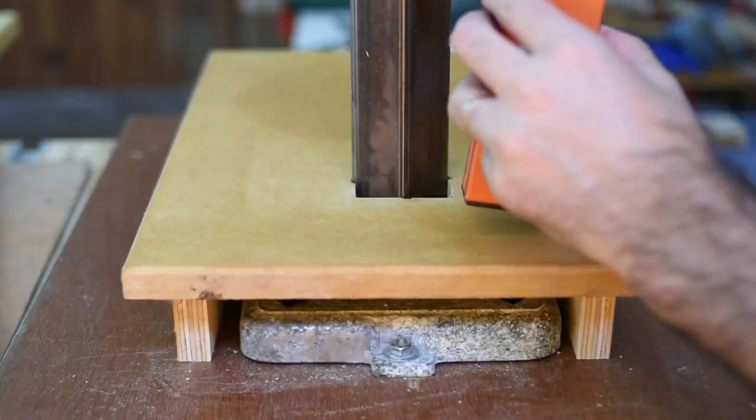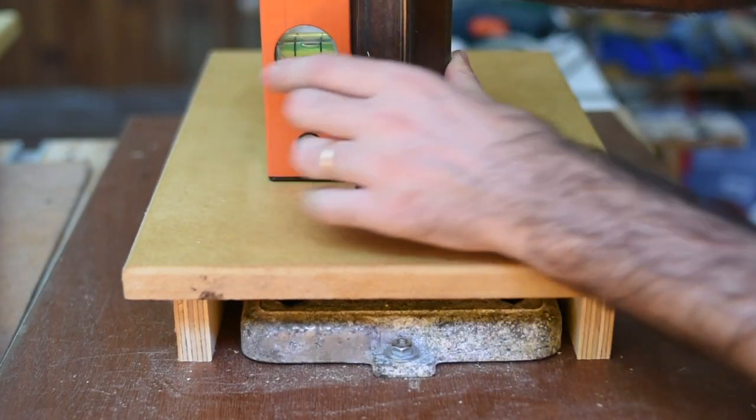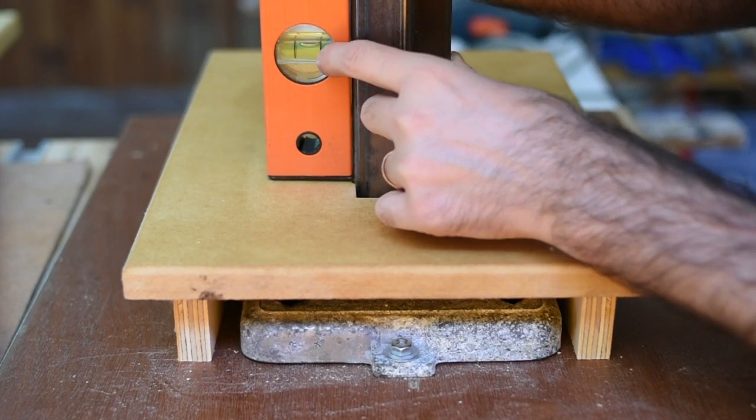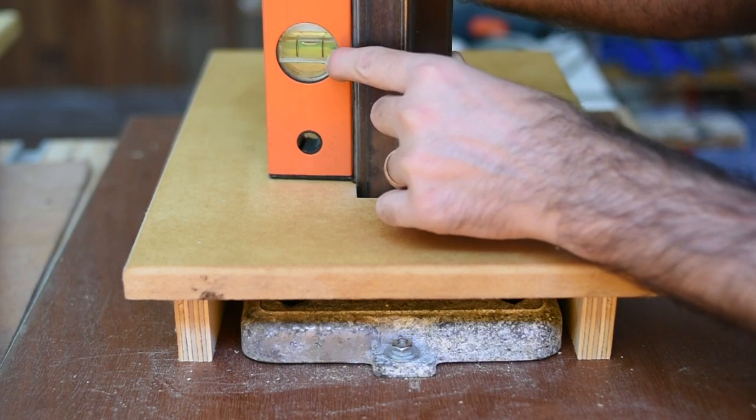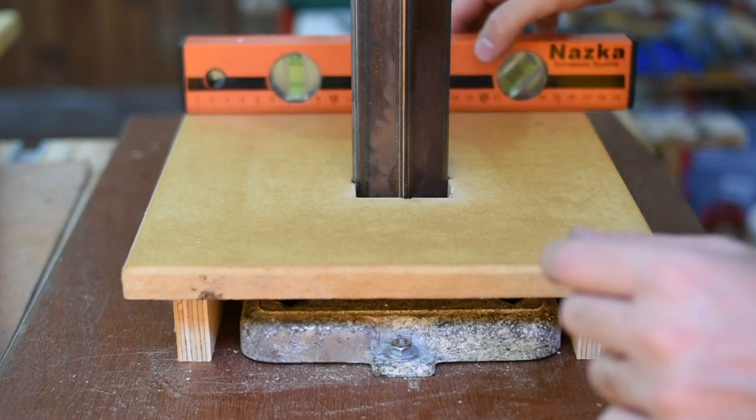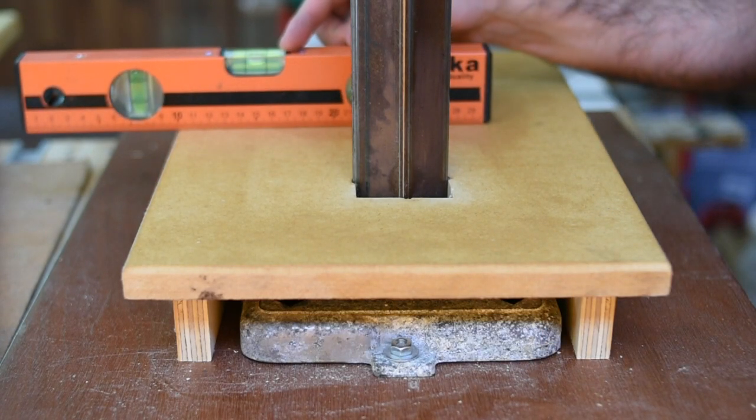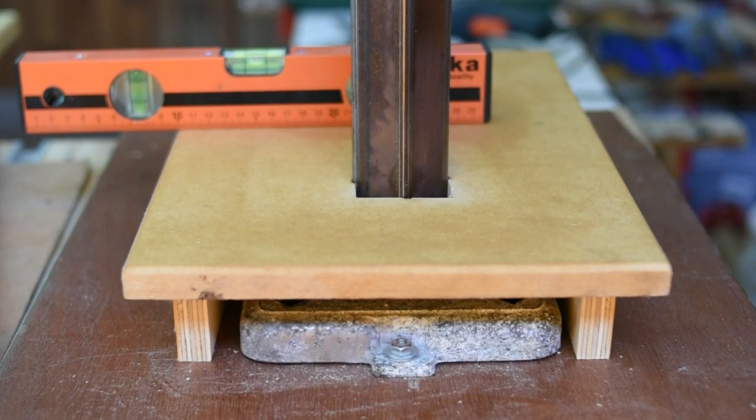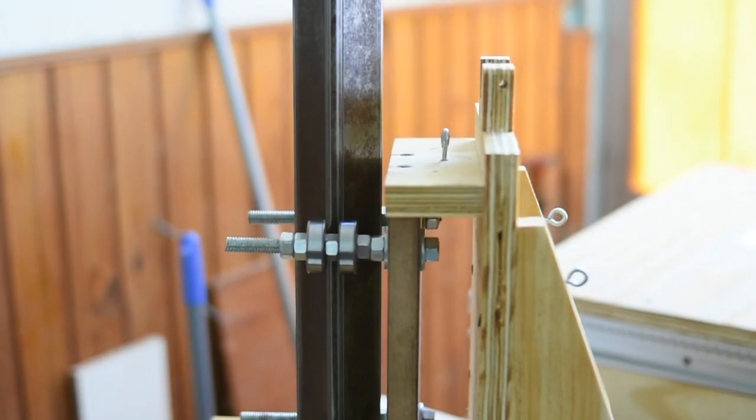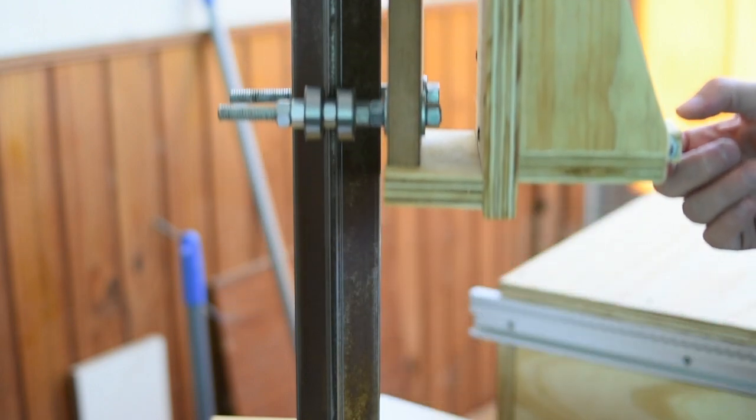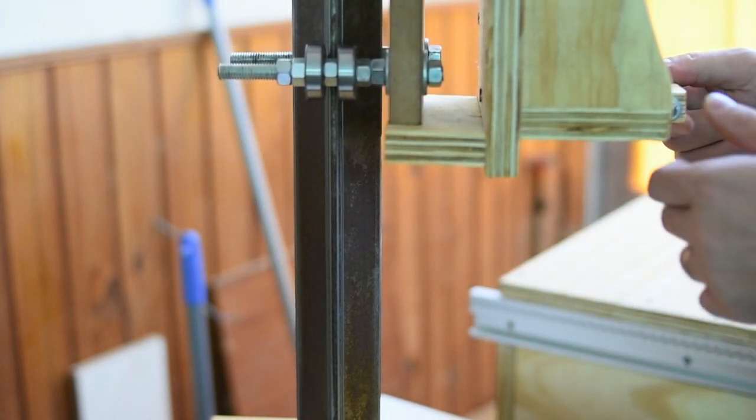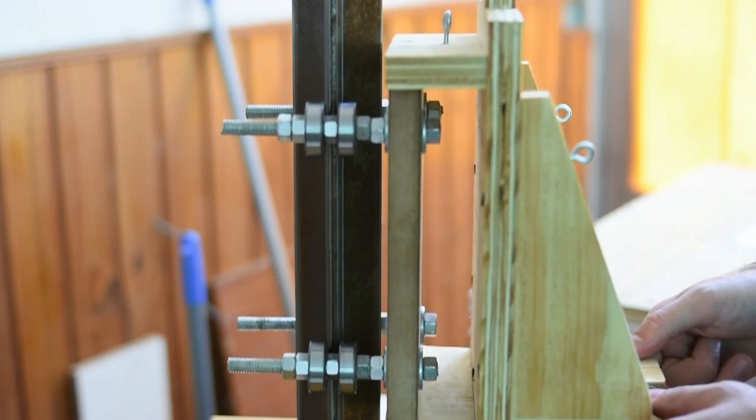La parte inferior, lo que hice fue calar una parte donde entraba el caño estructural, y verifiqué que el caño estructural estuviera recto, y la parte de abajo no la fijé hasta el final, porque eso me va a permitir al tener movimiento, centrarla y que quede en escuadra con la mecha, con el taladro.